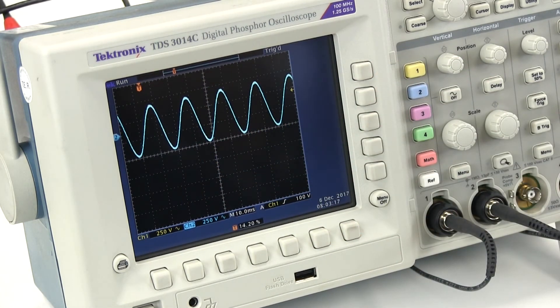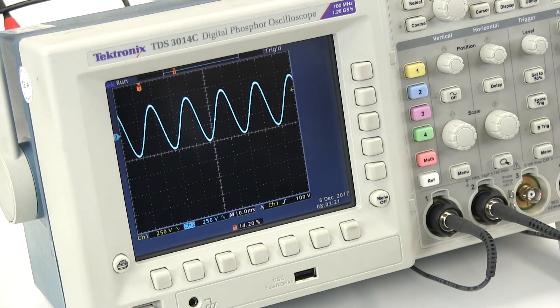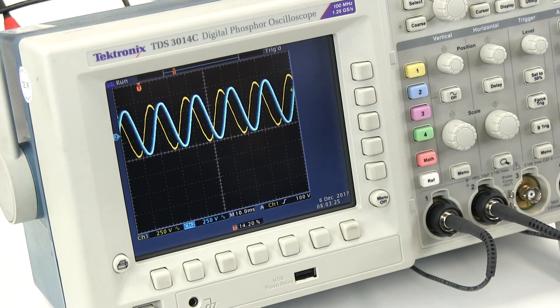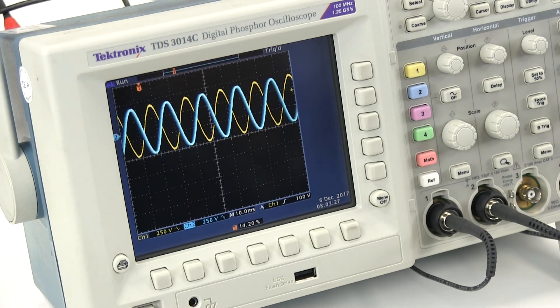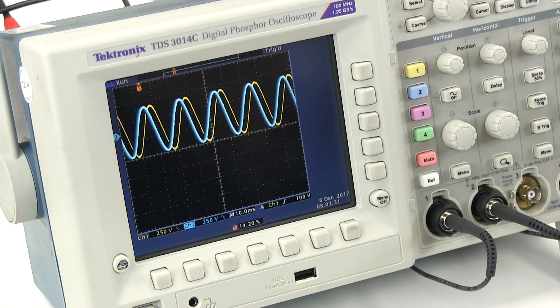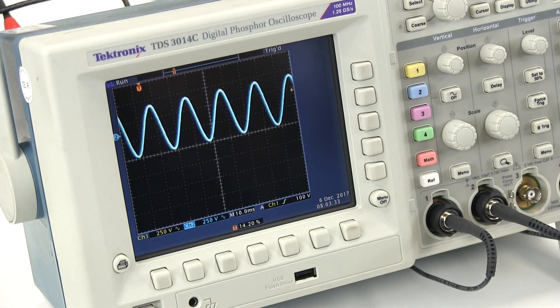Now if I instruct the UPS system to disable the synchronization, you will see that the two waveforms now stray apart. Under these conditions, the input and output are no longer synchronized and hence the bypass line would be unable to transfer instantaneously.